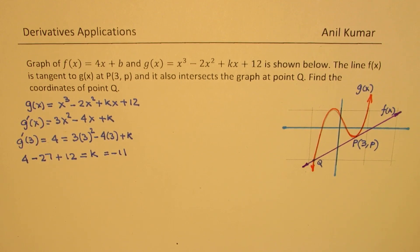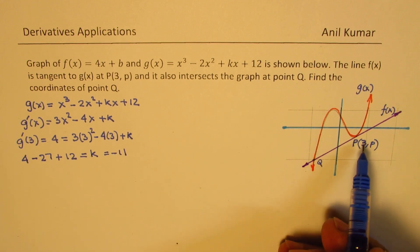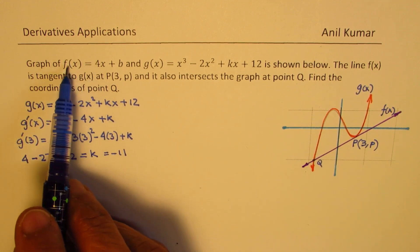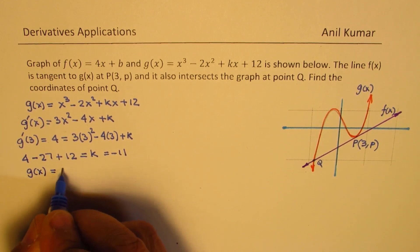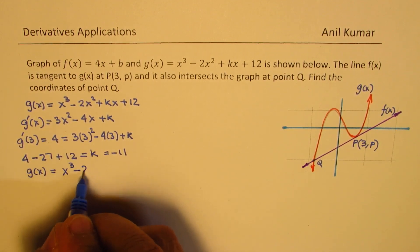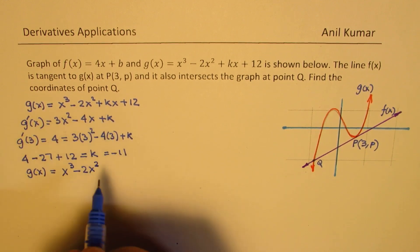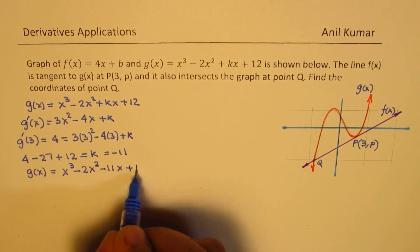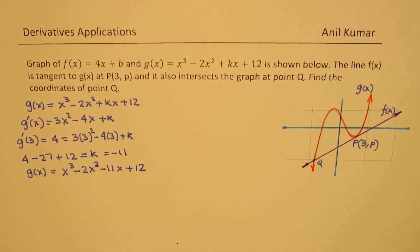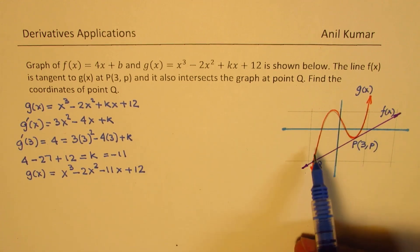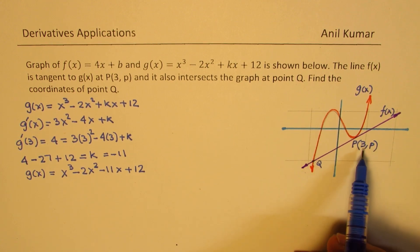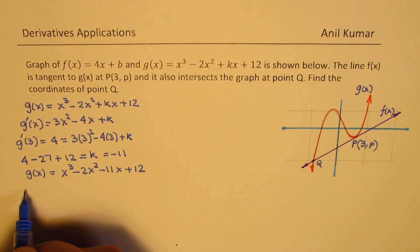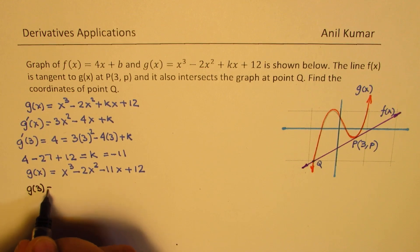Now since we know that the value of k is -11, we can actually find this point also. So we have the function g(x) = x³ - 2x² - 11x + 12. That is the value of k substituted in the function itself. Now once we know g(x), we can always find the value of this point P by substituting x as 3.